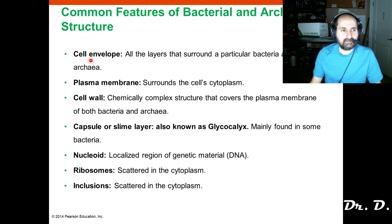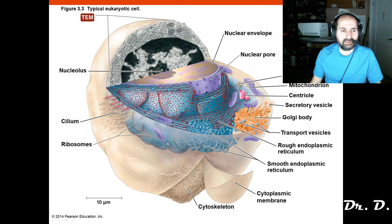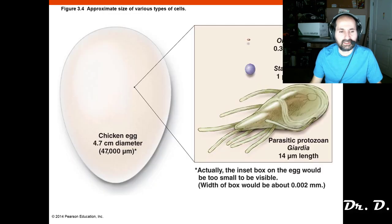Know anything in bold — all of these terms are very self-explanatory, so learn the terms in bold. Know that the eukaryotes — the algae, the protozoa, the fungi, the animals, and the plants — contain membrane-bound organelles and are quite large compared to prokaryotic cells.